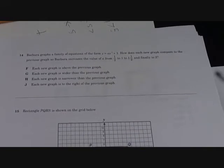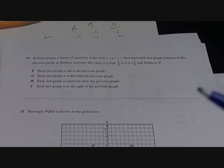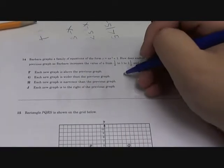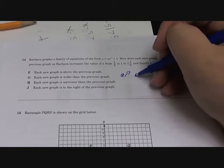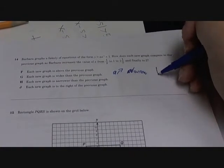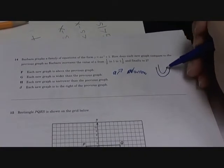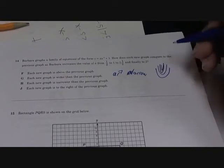The thing she is changing is the a. Remember the a tells you if it's wide. If a starts increasing, then it starts getting more narrow, meaning it goes from this to this to this and so on and so on.